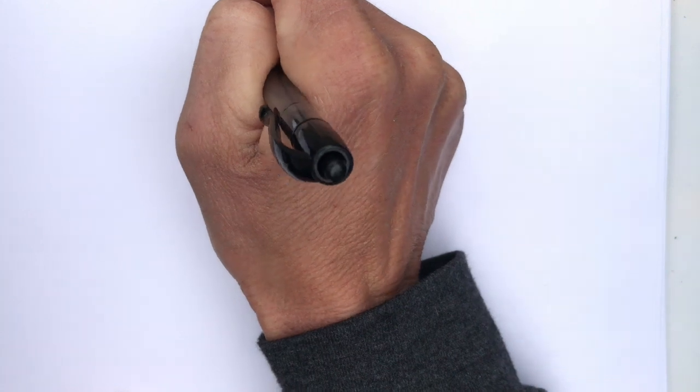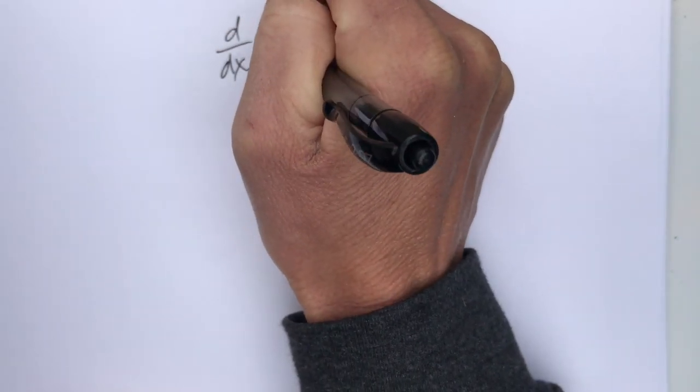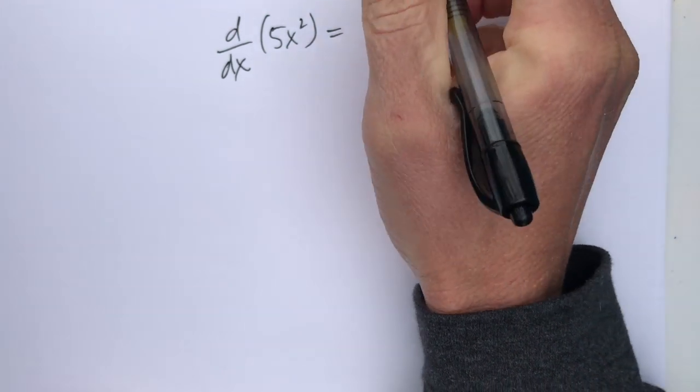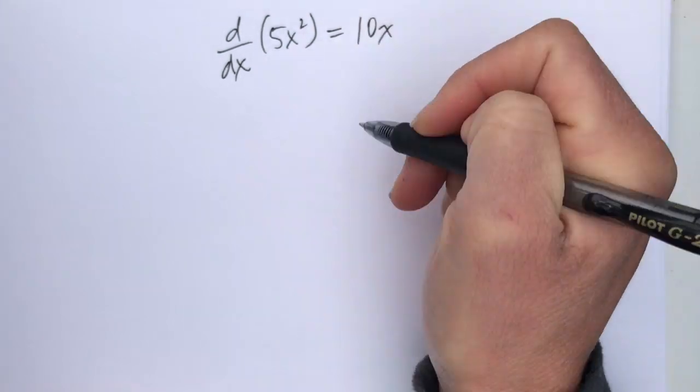So, let's just look at one more example. I can say d dx of 5x squared is equal to, well, what is the derivative of 5x squared? 10x.